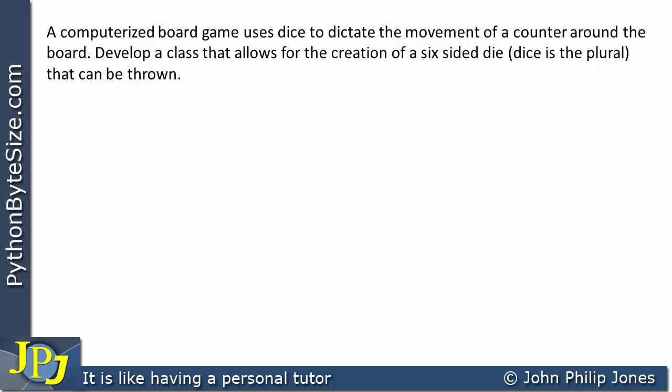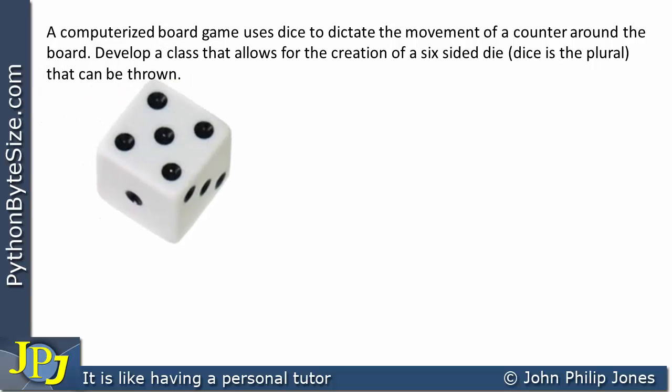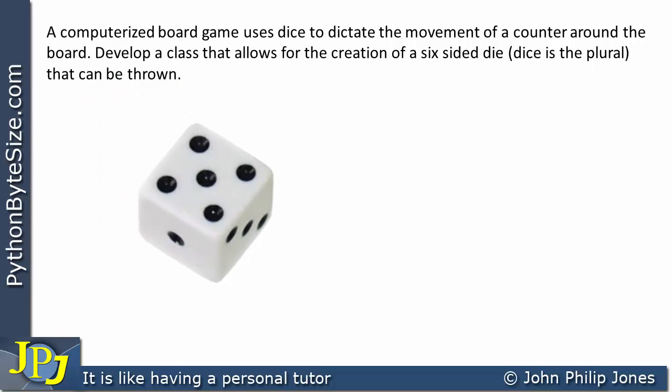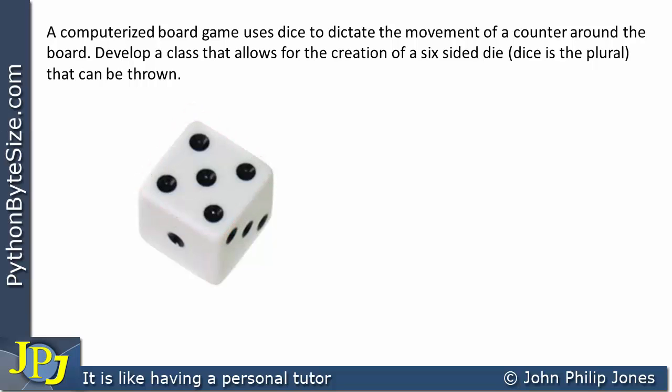Let's now consider a die. We've got one here, and when we throw this particular die it will stop, and we look at the side that's pointing up — that's the value we actually choose. So here, for example, we would choose five, because we can see there are five dots on this particular side.